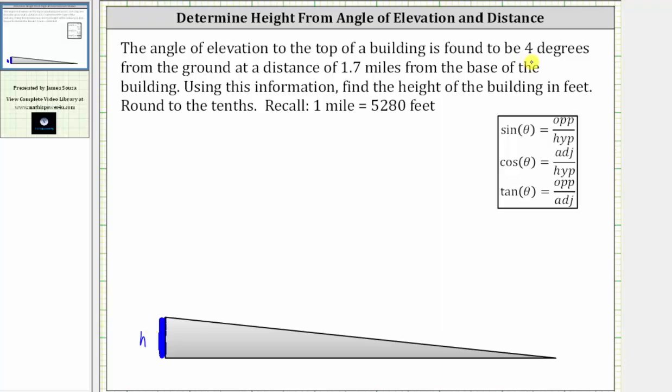And then the angle of elevation is four degrees at a distance of 1.7 miles from the base of the building. The angle of elevation is this small acute angle here, which is the angle from the ground up to the top of the building. And the distance of 1.7 miles will be the length of this long leg here.